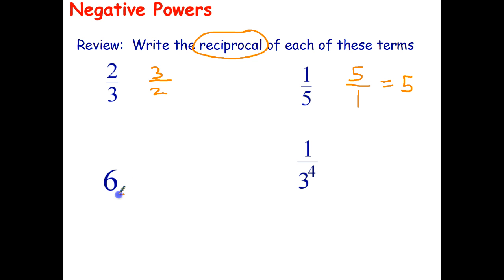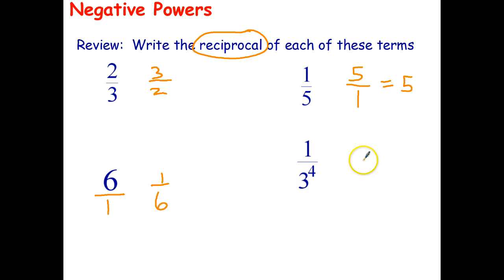If we have a whole number, well 6 can be written as 6 over 1, so its reciprocal becomes 1 over 6. And even if we have an expression in our denominator, we can rewrite that as 3 to the fourth over 1, or just 3 to the fourth. We're going to have to use the idea of reciprocals to help us understand negative powers.